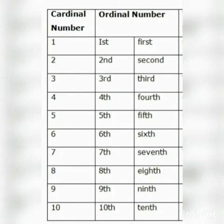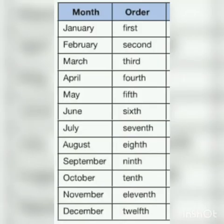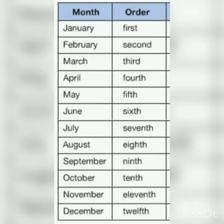Let us learn the months of the year by using ordinal numbers. There are 12 months in a year. January is the first month of the year, February is the second month, March is the third month, April is the fourth month, and May is the fifth month of the year.